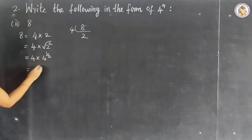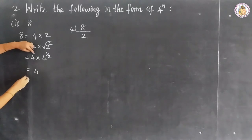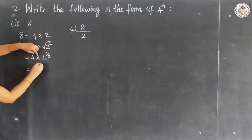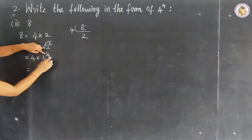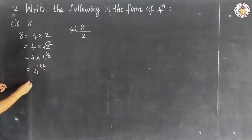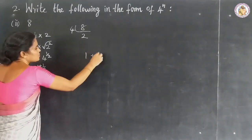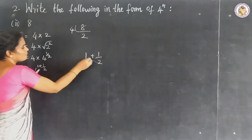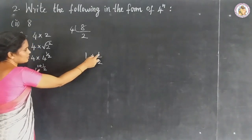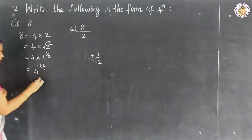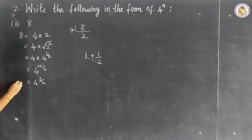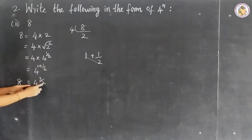The base is 4. So 4 to the power of 1 plus 1 by 2: adding, 2 by 2 plus 1 by 2 equals 3 by 2. So 8 equals 4 to the power of 3 by 2.